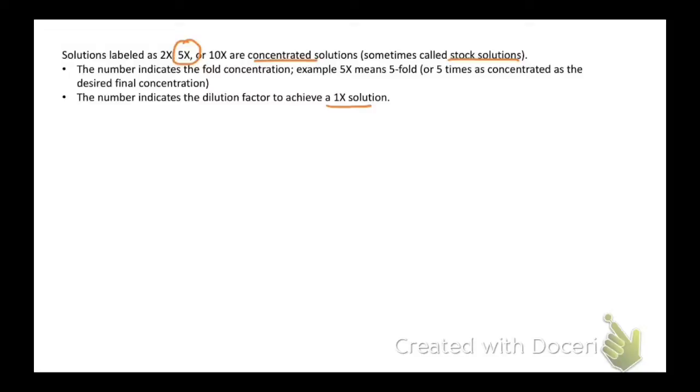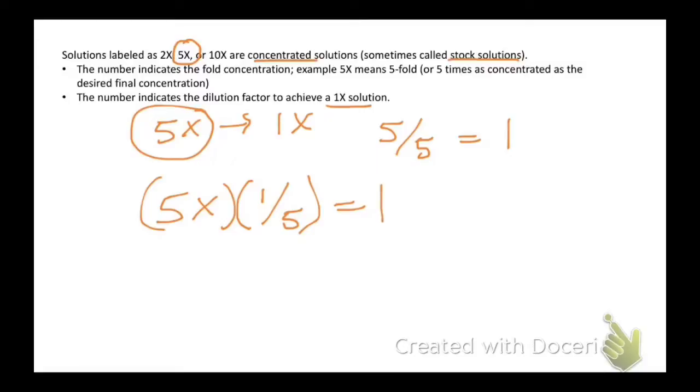So how do you figure out how to dilute that? To go from 5x to 1x, we think about what you would divide this by to get 1. So 5 divided by 5 equals 1. Another way of looking at that is 5x times 1 over 5 equals 1. This number, the 1-fifth, then becomes your dilution.